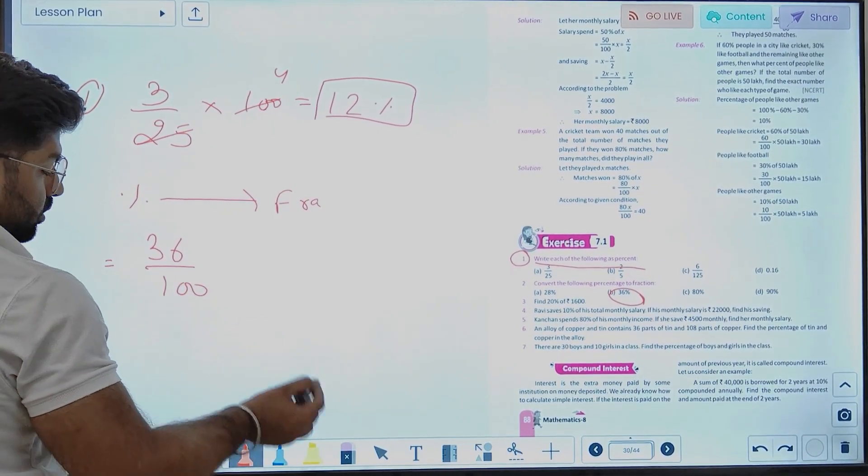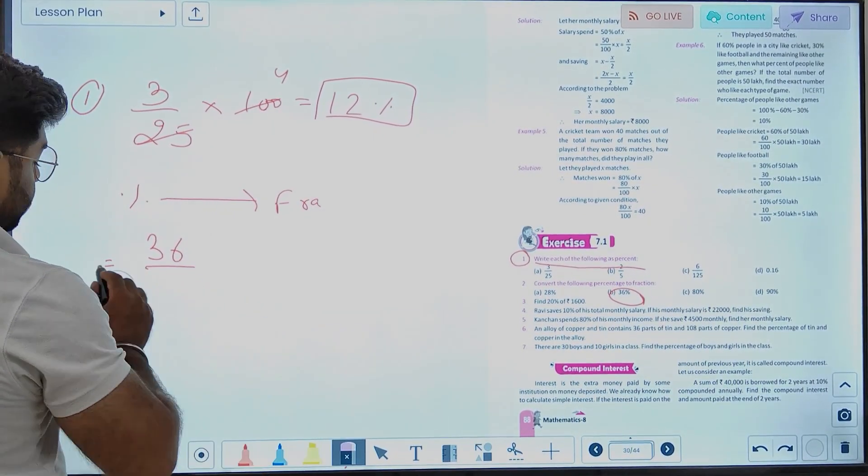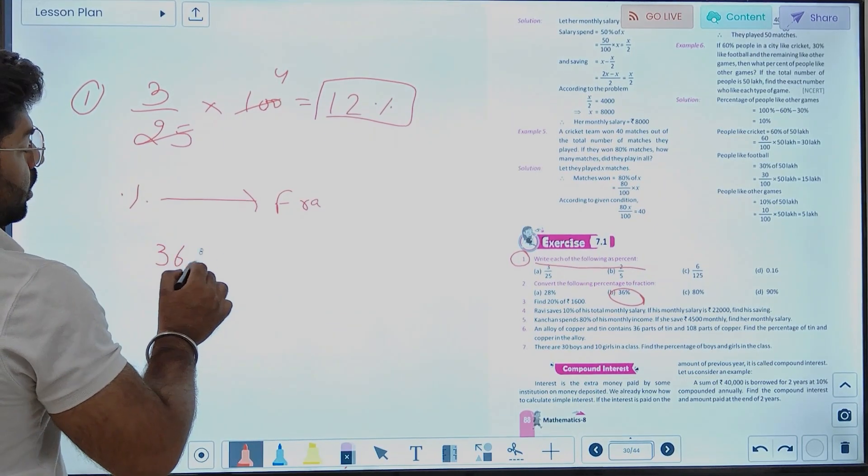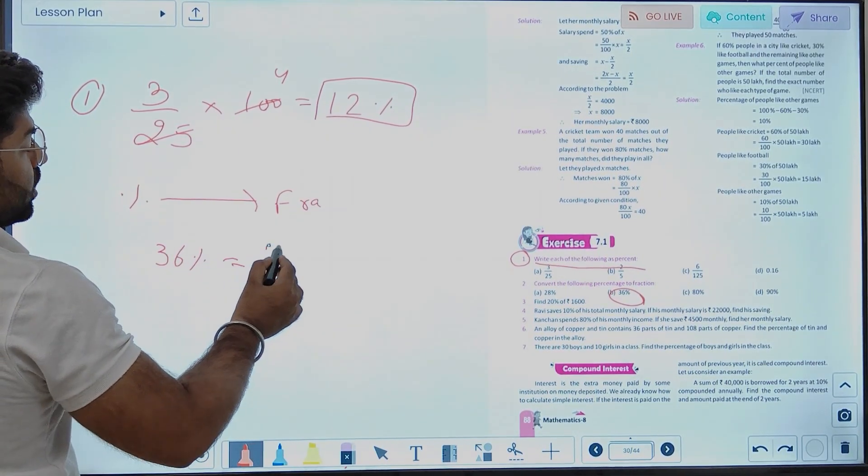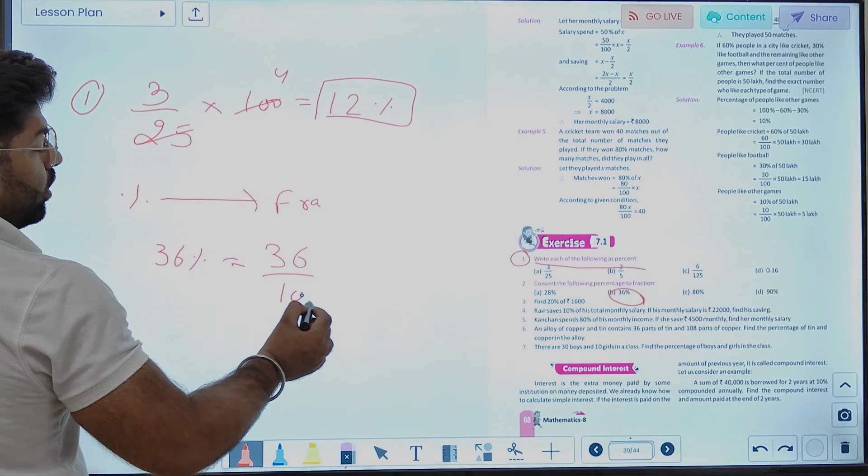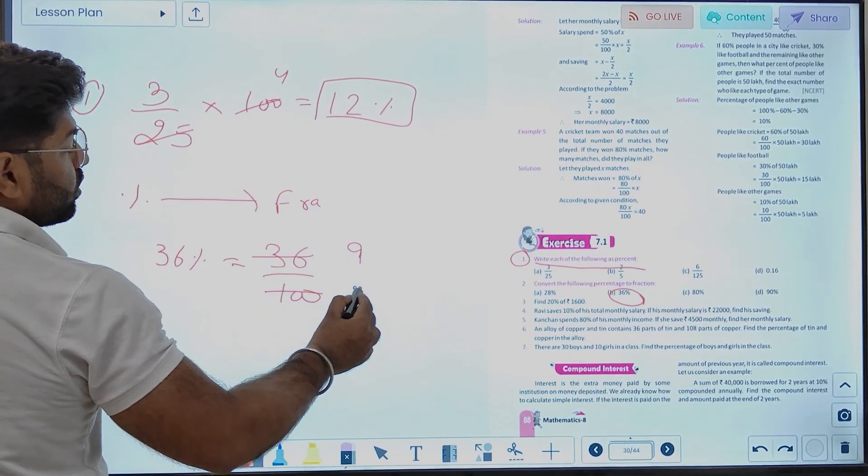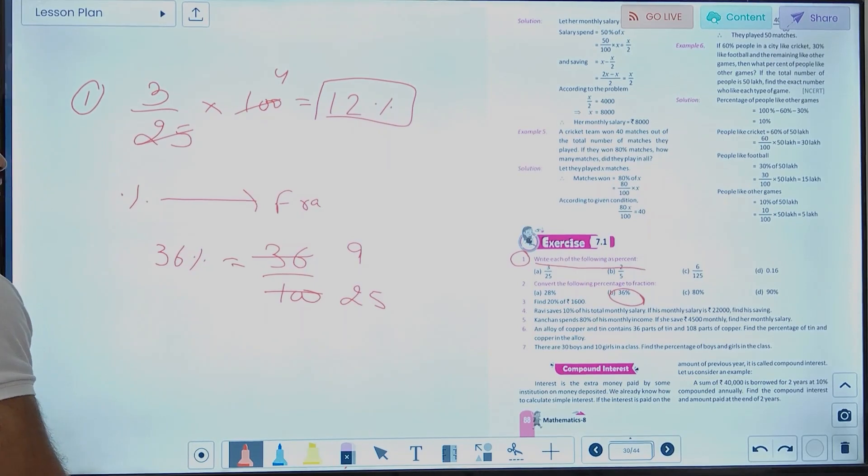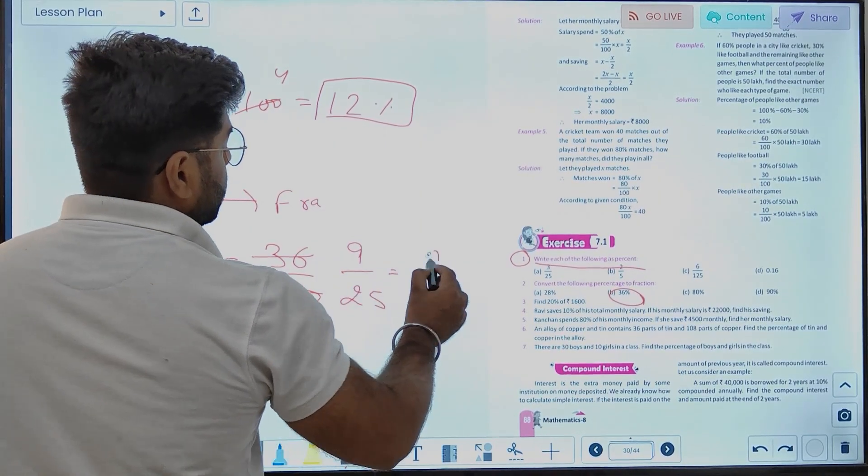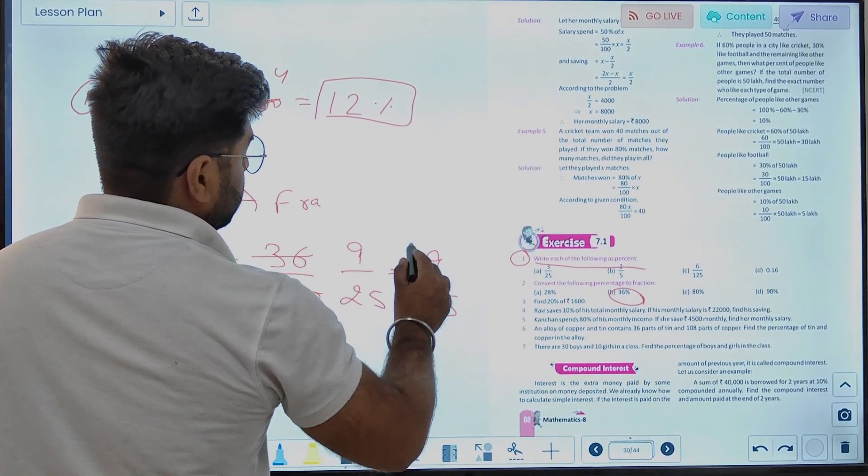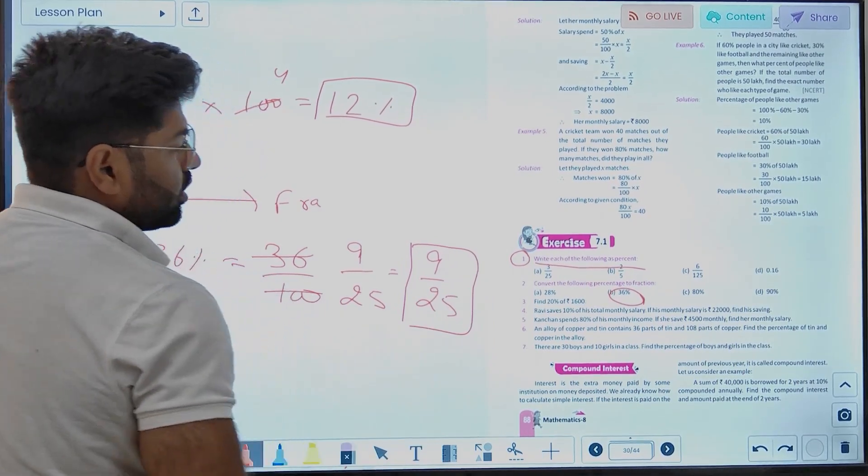So when we will do this, 36% as a fraction is 36 upon 100. If we do this, we will divide by 4 to get 9 upon 25. That's the fraction.